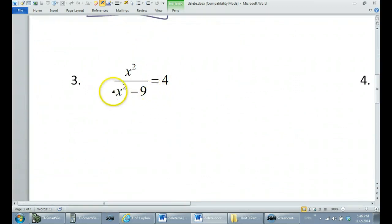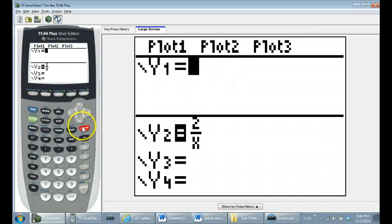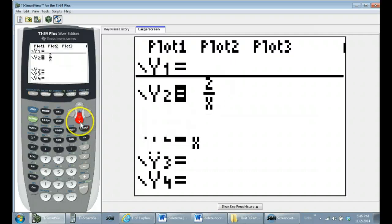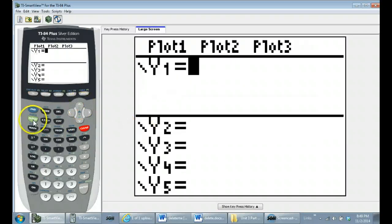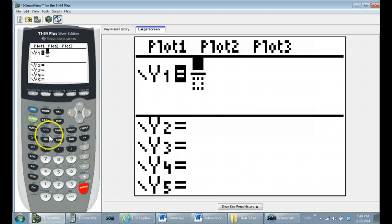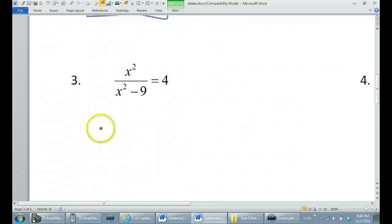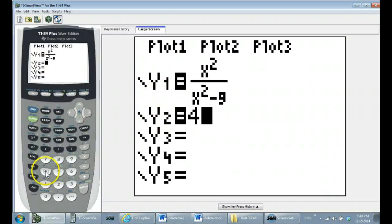Take a look at number 3. Let me clear that out. While I'm at it, I think I'll clear that one out too. So we'll do alpha y equals, enter. And I have x squared over x squared minus 9. That's my one equation. Now my other equation will be the 4 over here. So I can just type in 4. Let's take a look.